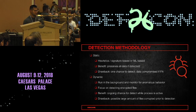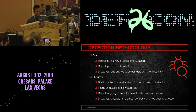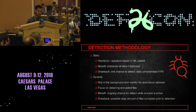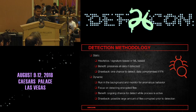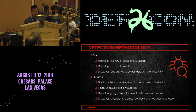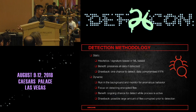Detection methodology can be broken down into two areas: static detections, which are either signature-based or machine learning-based. The main benefit is that all data is preserved if detection is successful, but the drawback is you essentially have one chance to detect whether a binary is ransomware or not. If we miss that, all data is going to be compromised on the host.